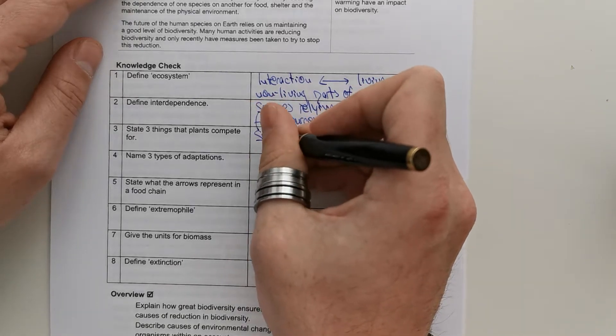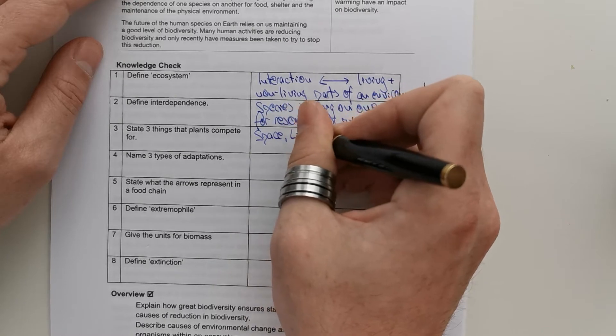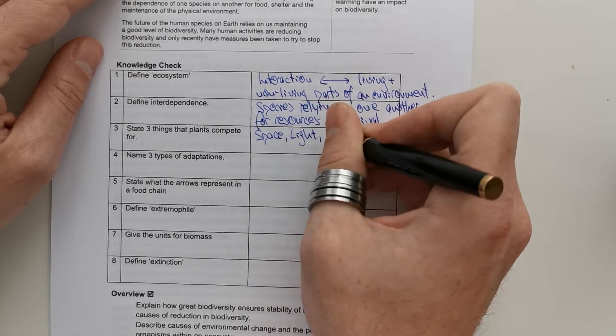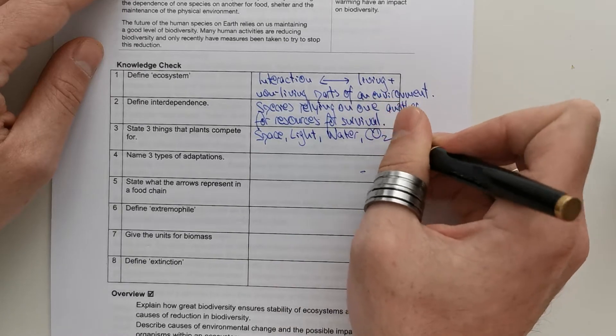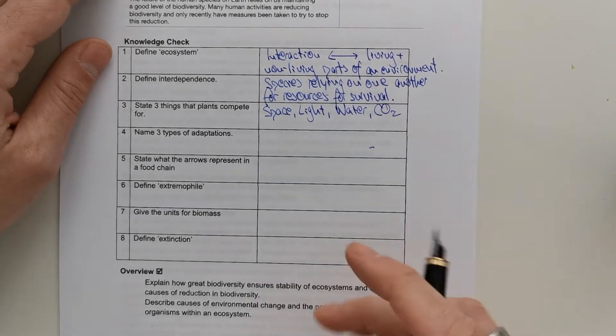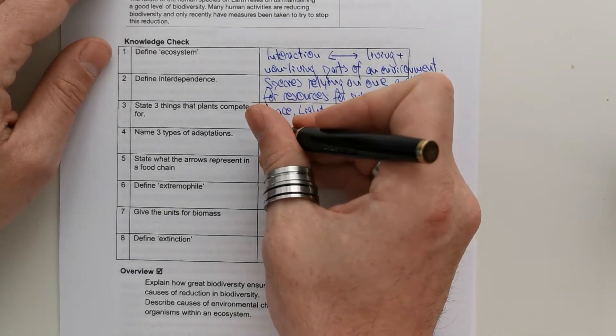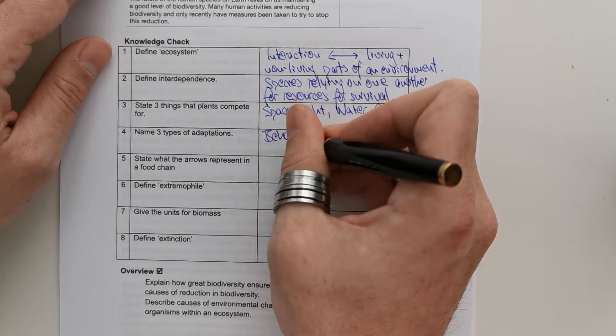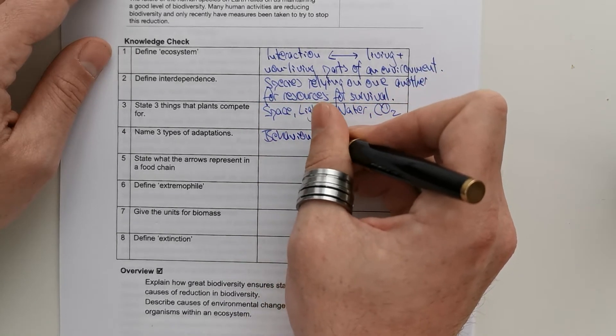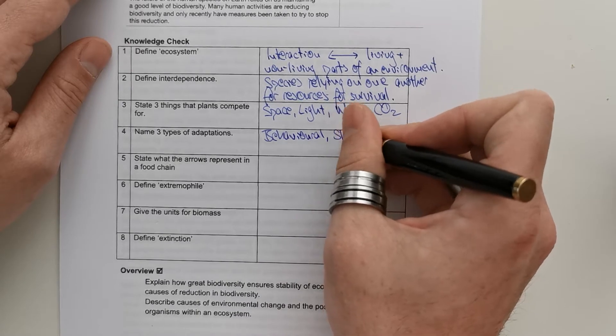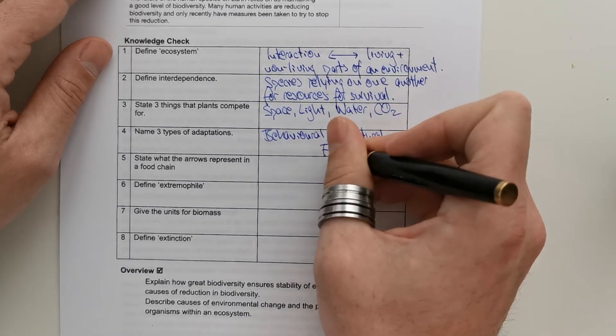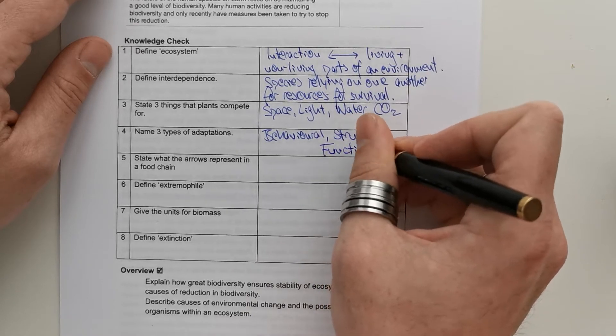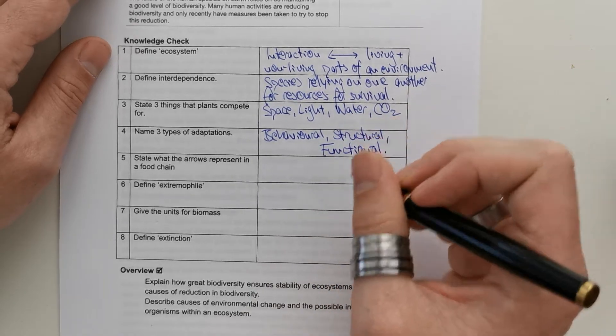State three things that plants compete for. Could be any of space, light, water, CO2. In our previous lessons, what are the three types of adaptations we've discussed? Behavioural, structural, and functional, involving processes like photosynthesis.